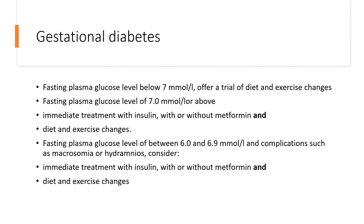For gestational diabetes management: fasting plasma glucose below 7 — offer a trial of diet and exercise changes. Fasting plasma glucose of 7 or above — immediate treatment with insulin, with or without metformin, plus diet and exercise changes. Fasting plasma glucose between 6 and 6.9 with complications like macrosomia or polyhydramnios — consider immediate treatment with insulin, with or without metformin, and lifestyle and dietary changes. Everyone gets lifestyle and dietary changes. Recommended exercise is at least 30 minutes of walking after every meal.